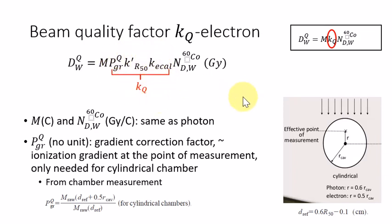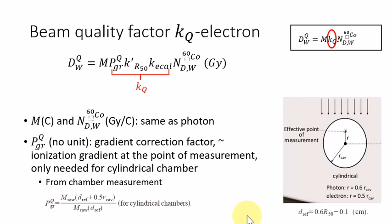The KQ factor equals the P gradient multiplied by the KR50' multiplied by the KECAL factor. The first factor is the P gradient. It has no unit. The P gradient is the gradient correction factor.